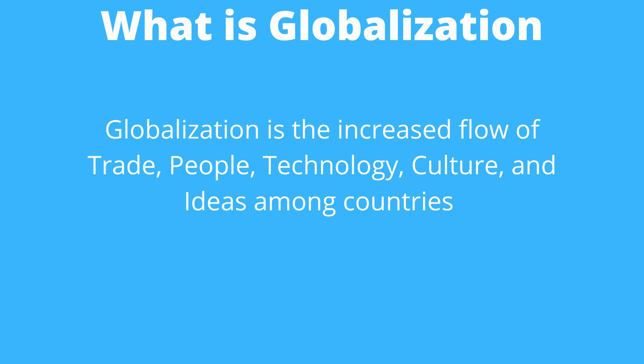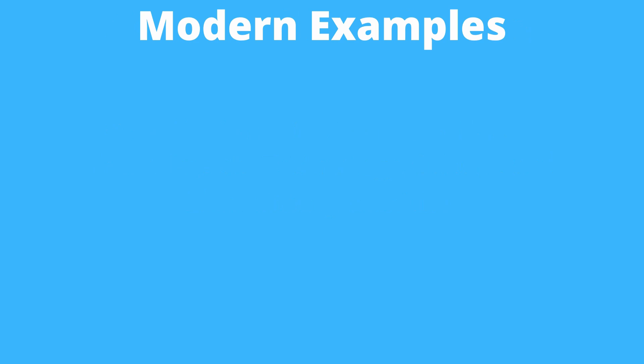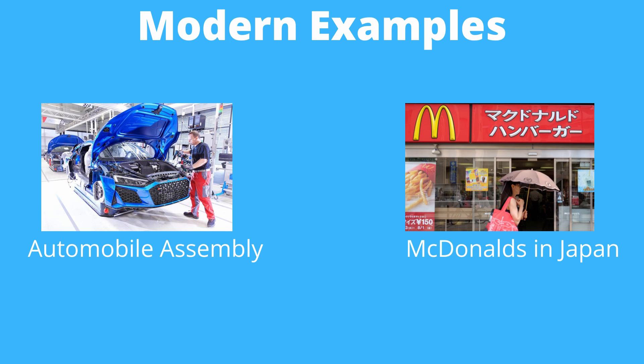Globalization is the increased flow of trade, people, technology, culture, and ideas among countries. Some modern examples of globalization include automobile assembly and bringing a franchise over to a new country. Automobiles are made up of many different parts which may need to be imported from many different countries around the world.